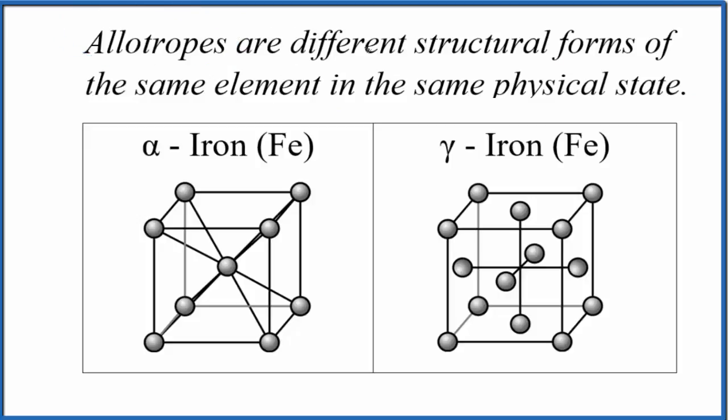So to recap, allotropes have different structural forms but they're made up of the same element in the same physical state. This is Dr. B with the definition, examples, and some practice with allotropes. Thanks for watching.